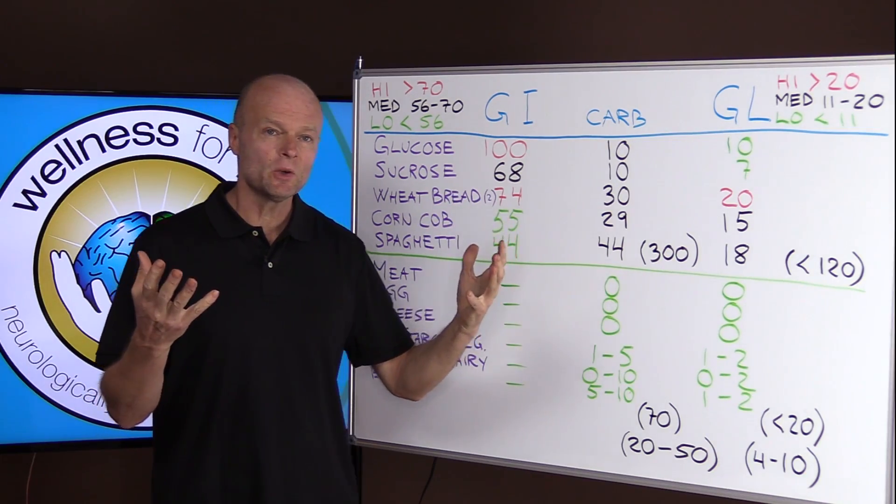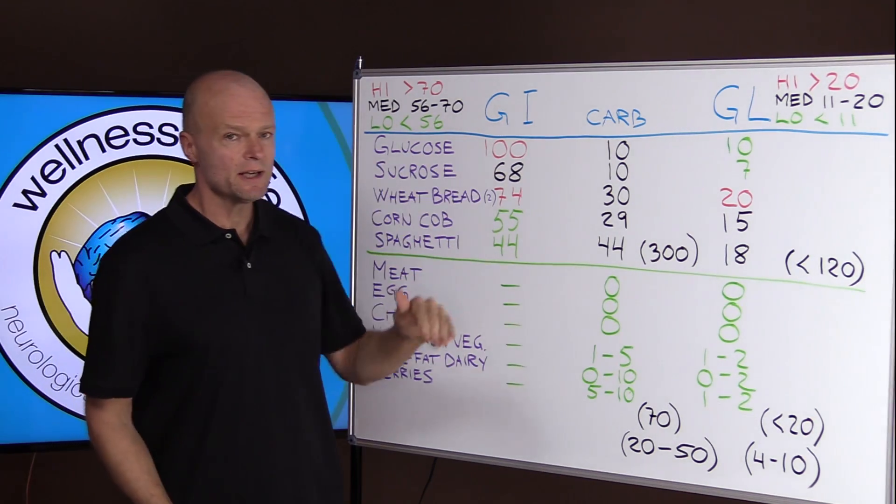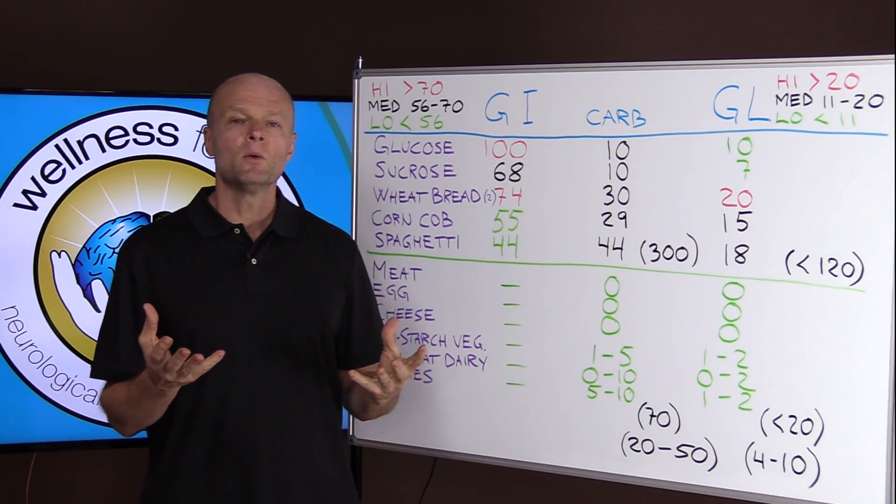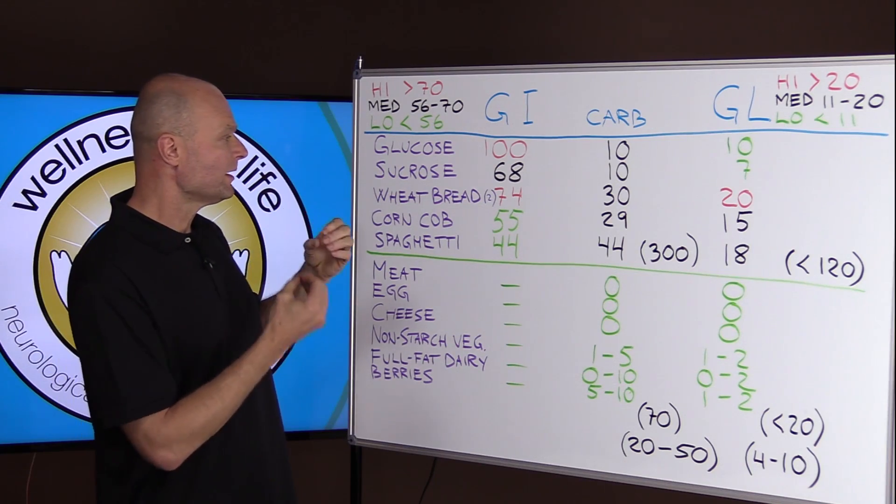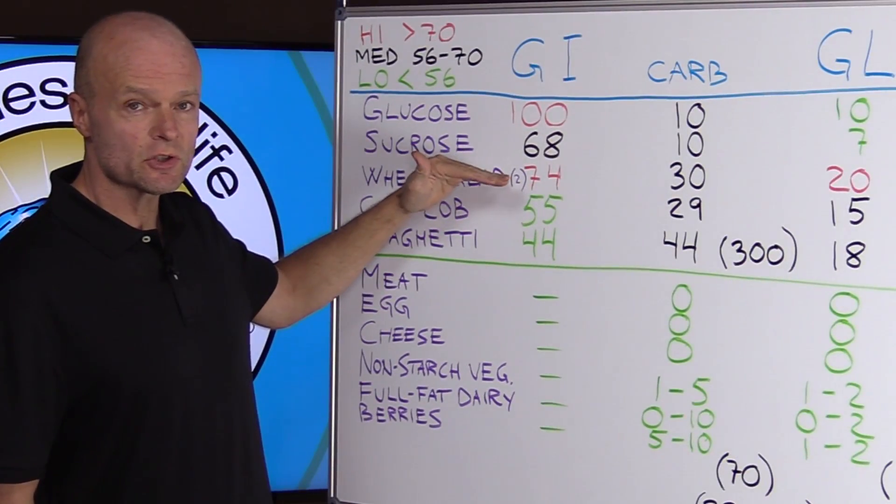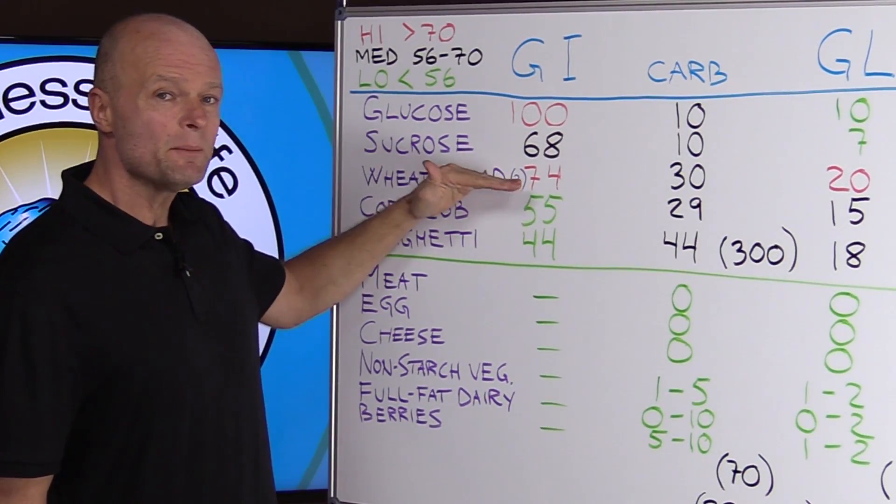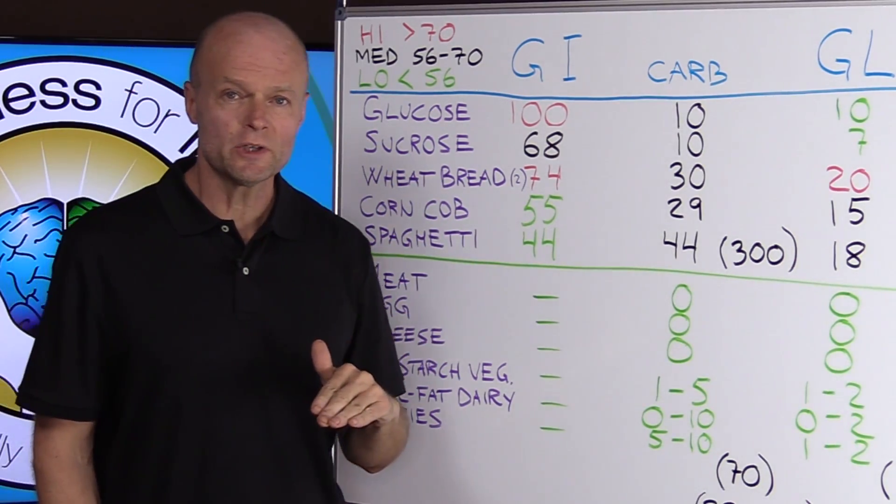It turns into sugar in your body faster than pure table sugar. And then some people argue that, well then table sugar isn't so bad after all. Well, it's all relative, and we're going to talk about how pure table sugar is a really bad idea and how wheat bread is even worse.